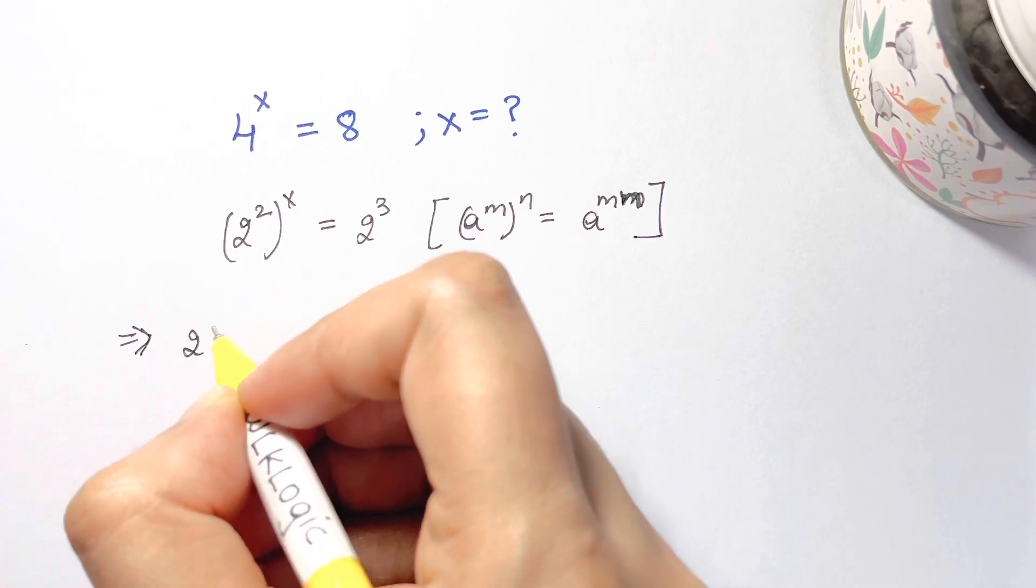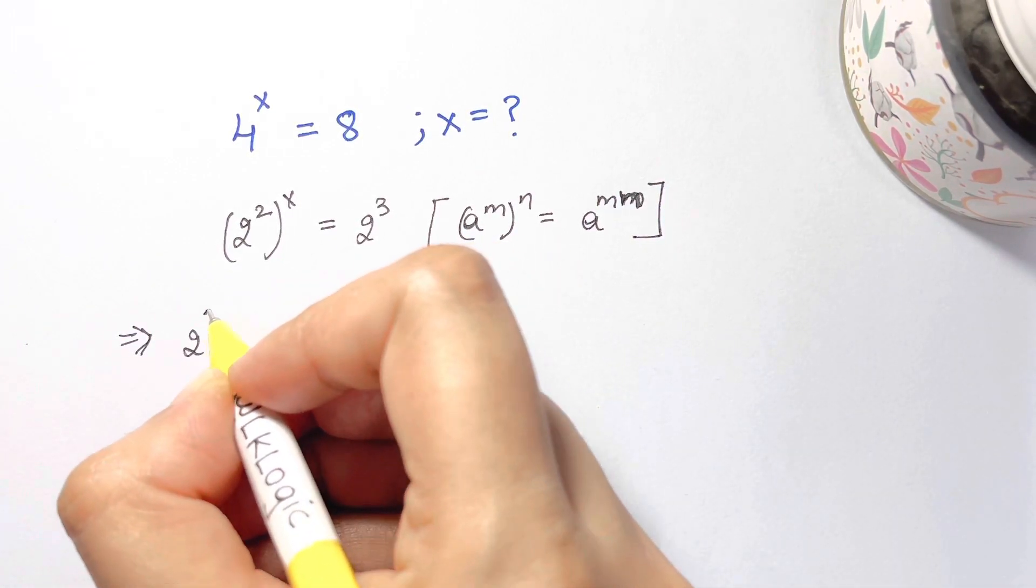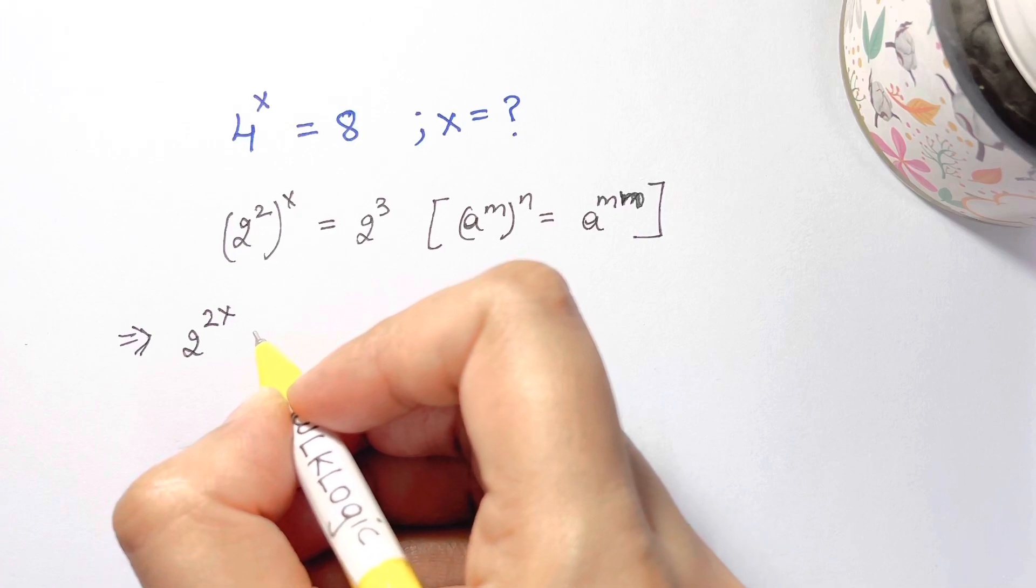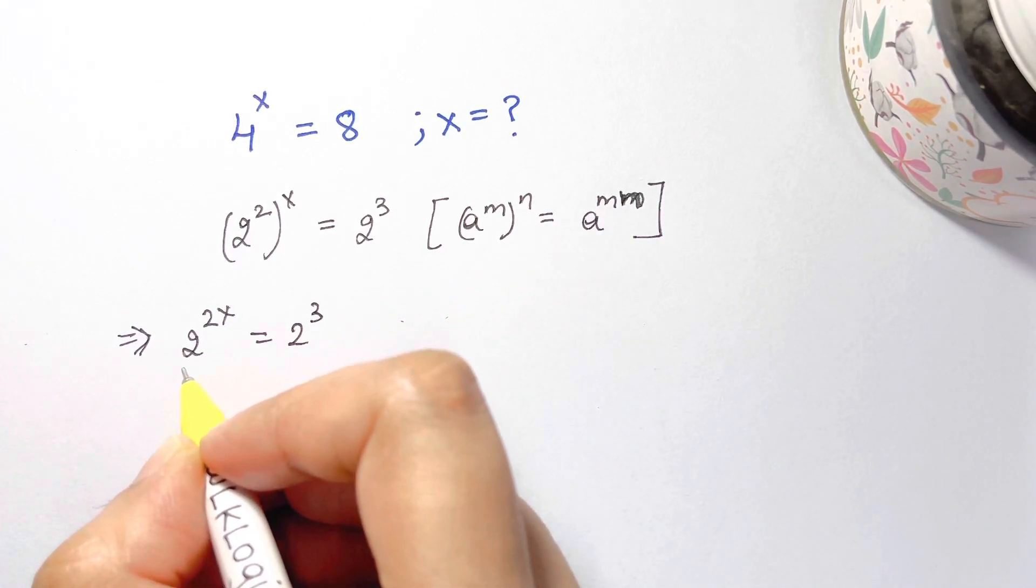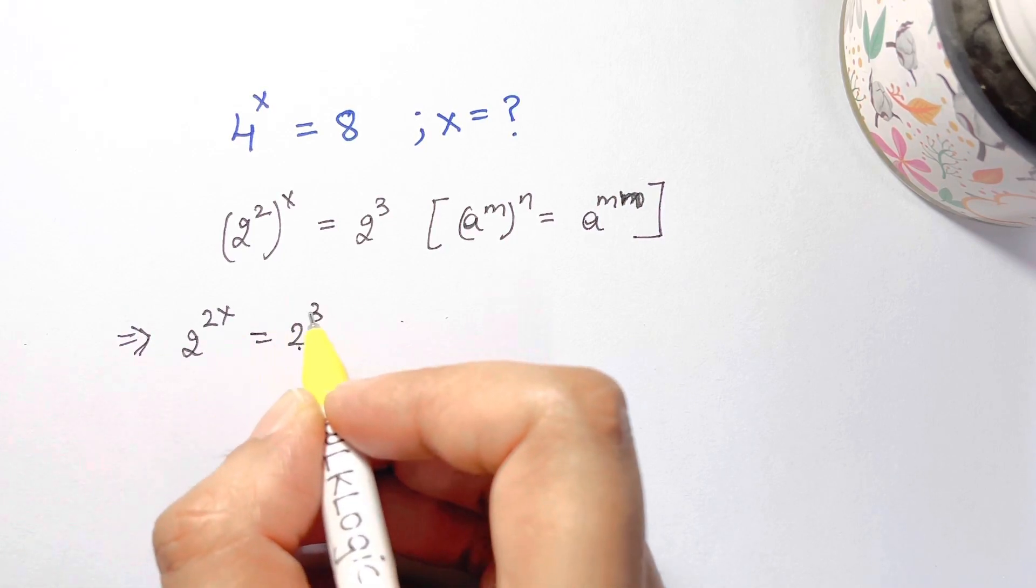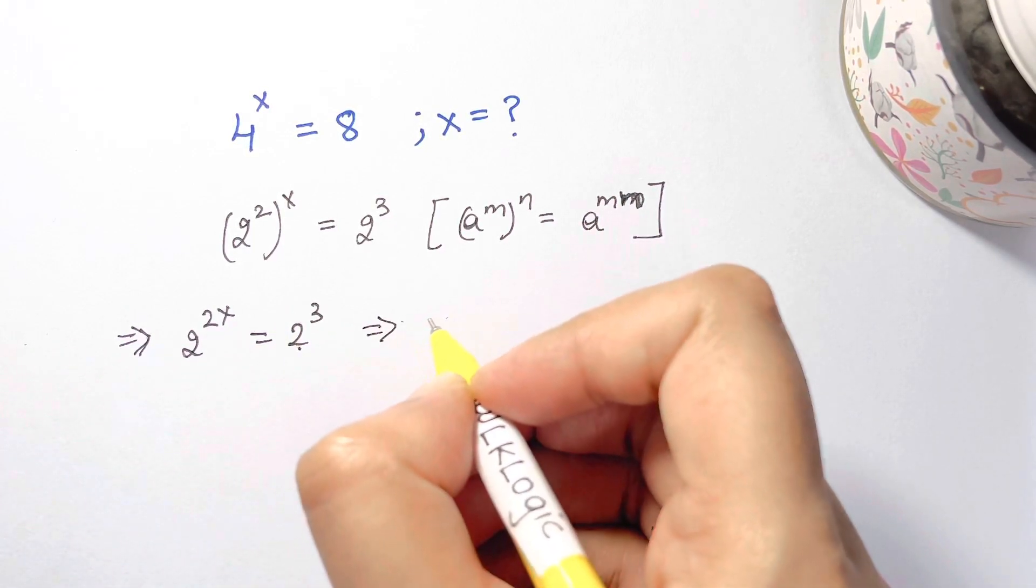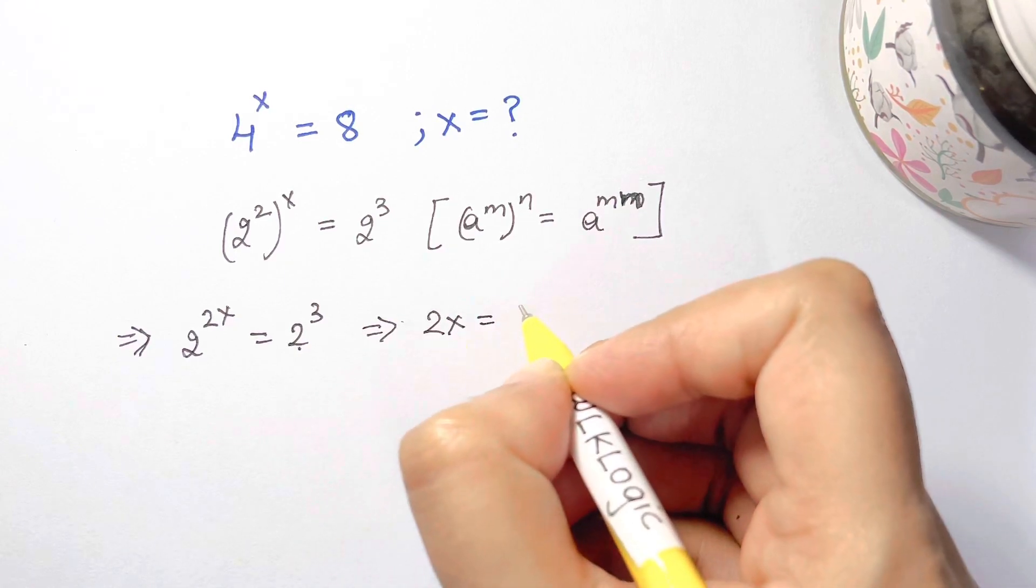So we're going to apply this here. We have 2^(2x) = 2³. Now when you have same bases with equals between them, you can equate the powers. So we have 2x = 3.